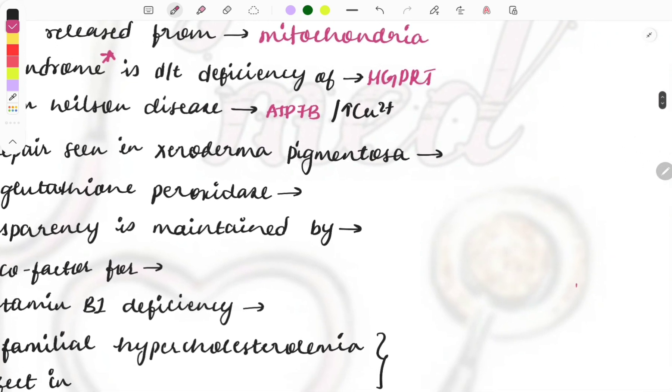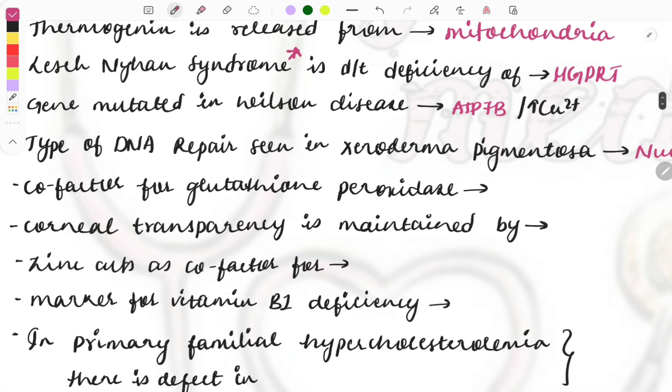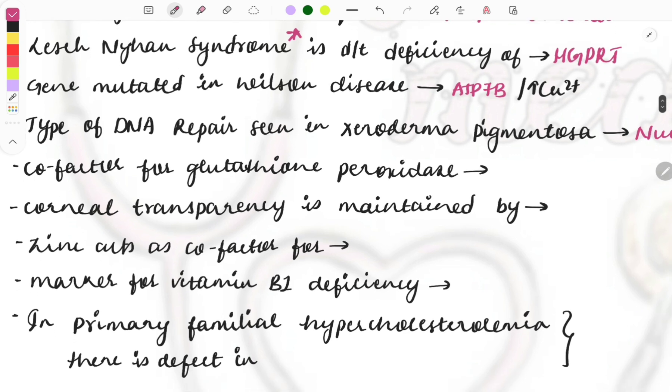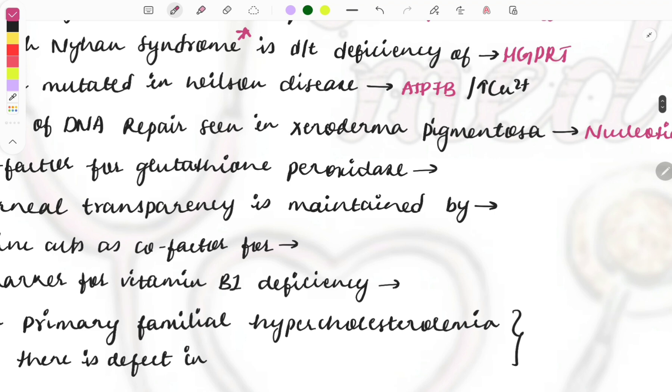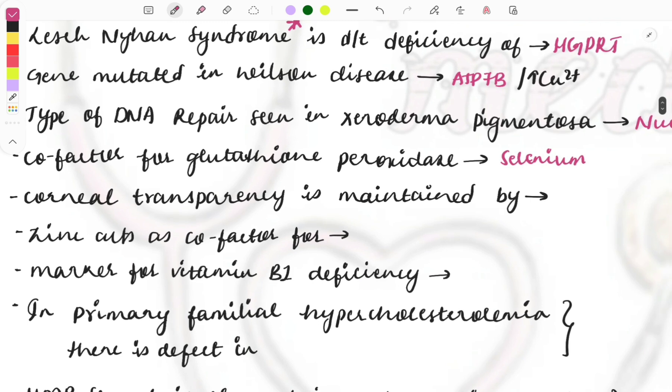Type of DNA repair seen in case of xeroderma pigmentosa? Again a repeat question - it is nucleotide excision repair. Cofactor for glutathione peroxidase? It is selenium. Selenium acts as a cofactor, that means it will increase support to this glutathione peroxidase to show its action.